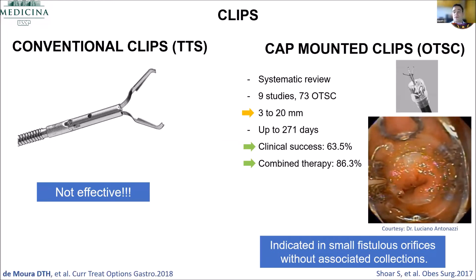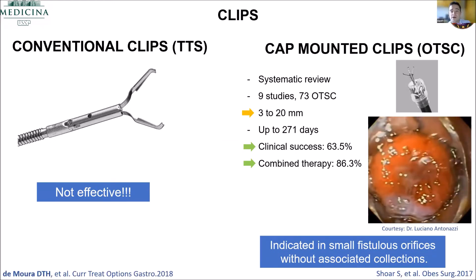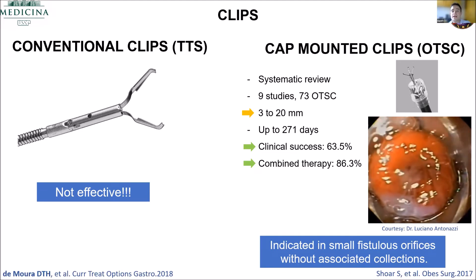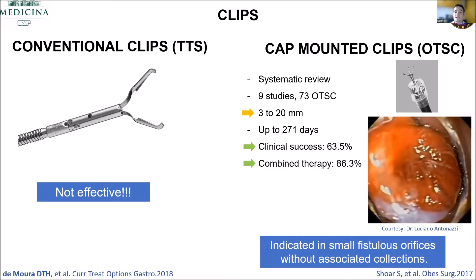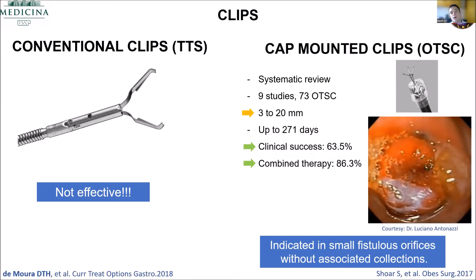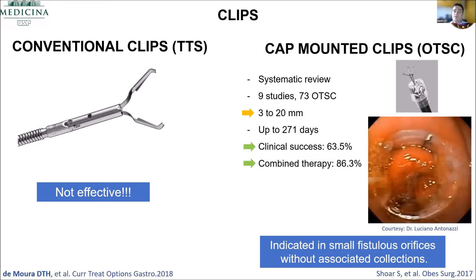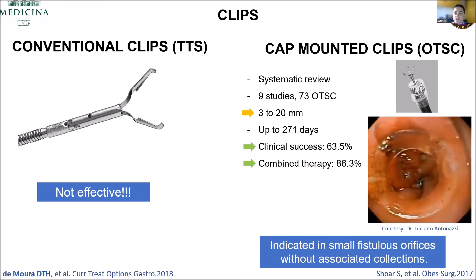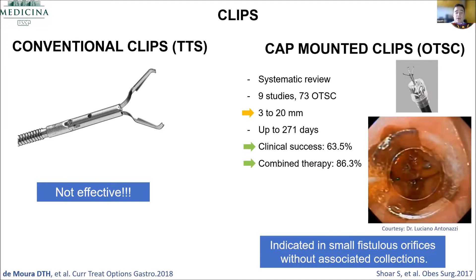Conventional clips do not work for fistulas and leaks — never use them, it's just a waste of money. Cap-mounted clips can work when the defect is smaller than two centimeters. But always remember, when you close the defect, you need to have an external drainage when there is an associated collection.